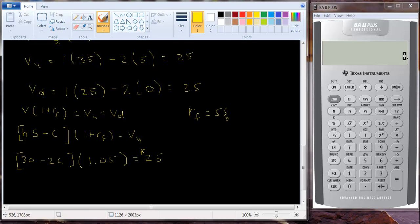So, what do you do here? Well basically, you do some algebra to solve this thing out. Several ways you can do it, I guess you can divide both sides by 1.05, let me try that. So, let's do this, 30 minus 2C equals 25 divided by 1.05. So let's take 25 and divide it by 1.05. So we get $23.81.